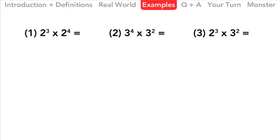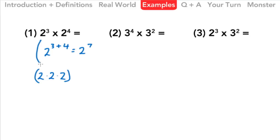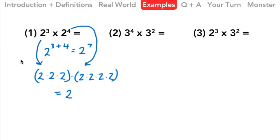Let's take a look at some examples. The first example is 2 to the 3rd times 2 to the 4th. It really is as simple as writing 2 to the 3 plus 4, which equals 2 to the 7th power — that's our answer in exponential form. We could go through the whole procedure: 2 to the 3rd is 2 times 2 times 2, and 2 to the 4th is 2 times 2 times 2 times 2, so this all equals 2 to the 7th power. When we add the 3 and the 4, we get 2 to the 7th power.